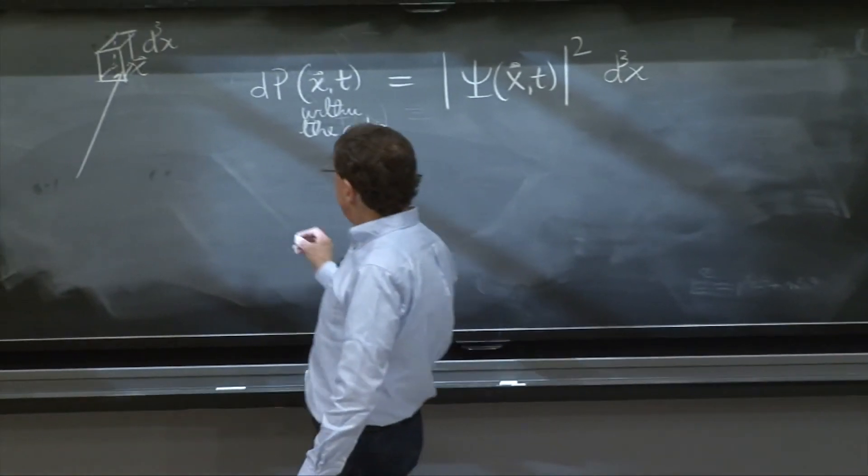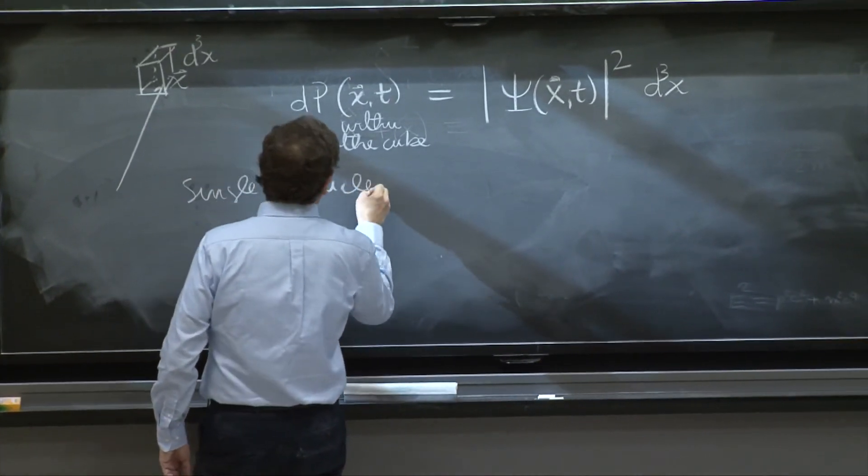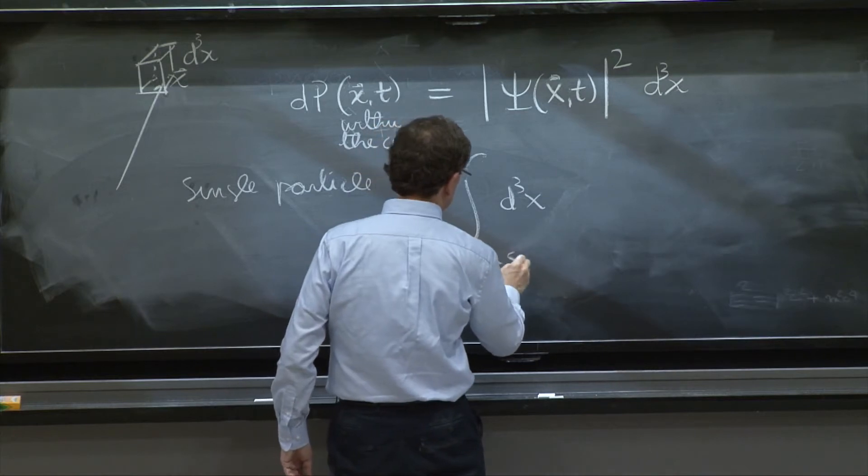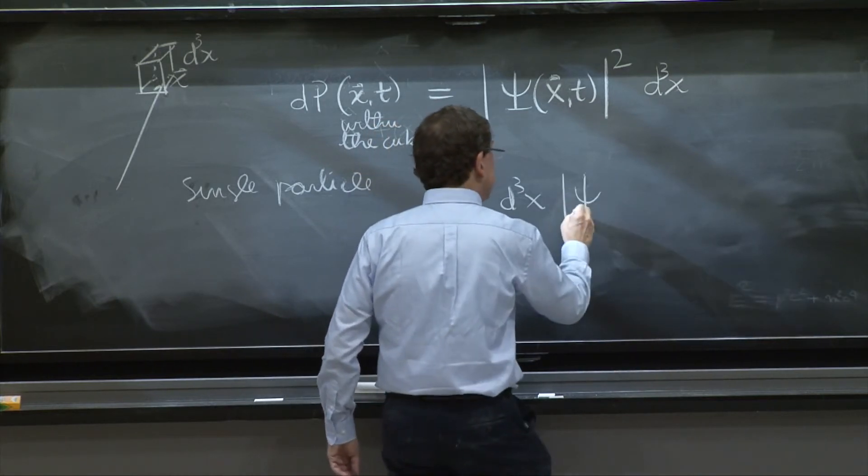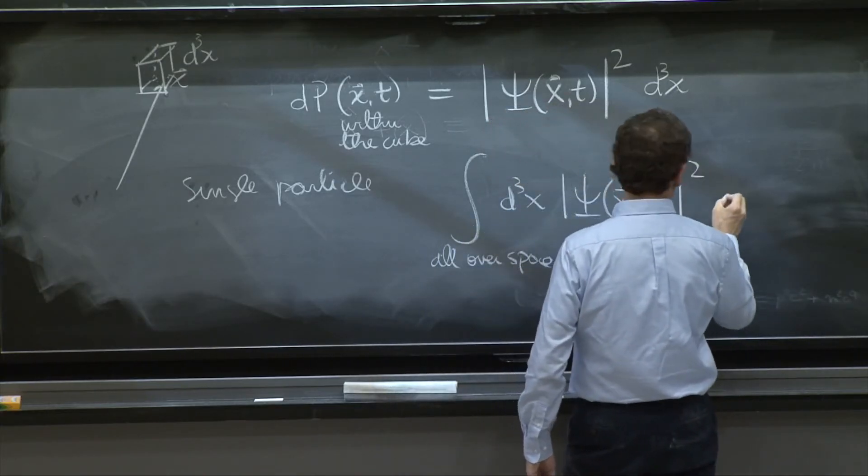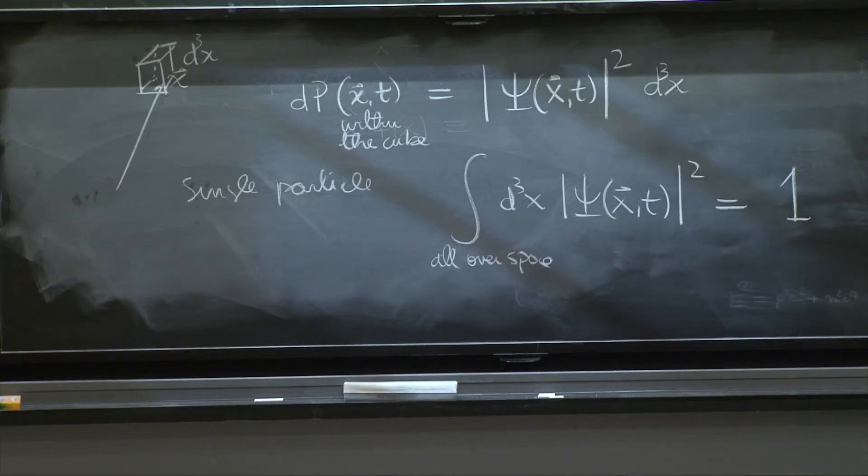So it better be, if you have a single particle, it better be that the integral all over space of psi squared of x and t must be equal to 1, because the particle must be found somewhere. And the sum of the probabilities to be found everywhere must add up to 1.